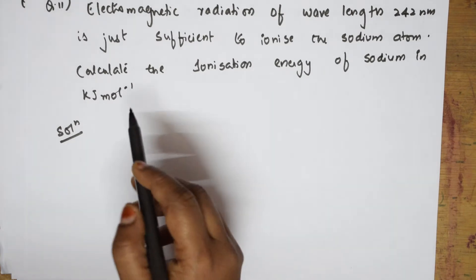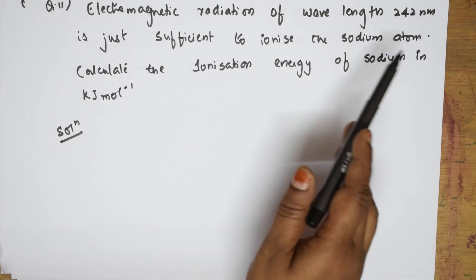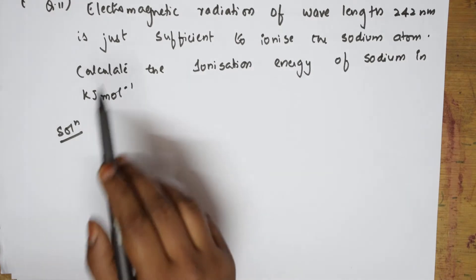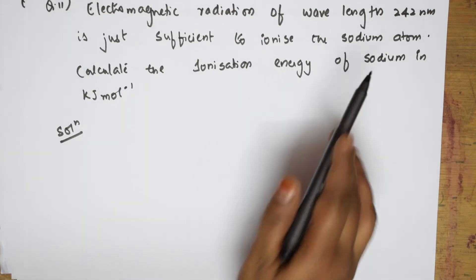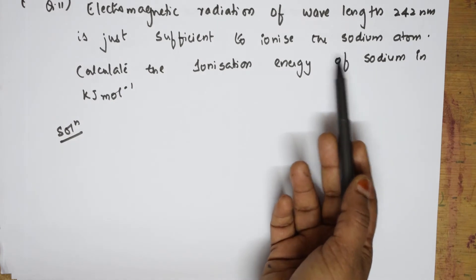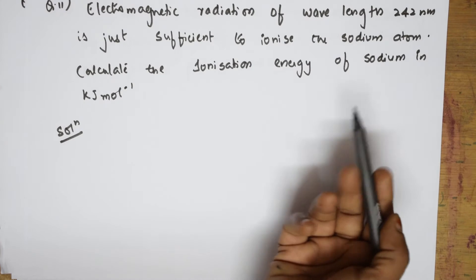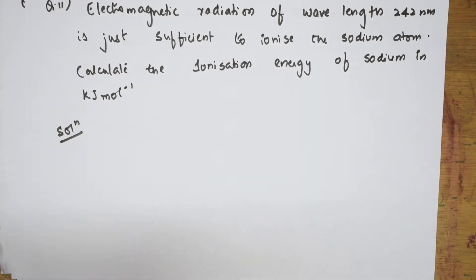Today let us read what else is given to us. Electromagnetic radiation of wavelength 242 nanometers is just sufficient to ionize the sodium atom. So 242 nanometers wavelength is used to ionize the sodium atom. Calculate the ionization energy of sodium in kilojoules per mole. What should you remember? E photon — the ionization energy I need to calculate.